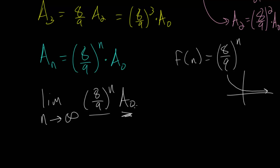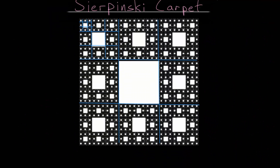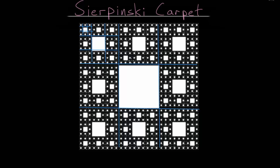Since this is a constant and the other factor gets closer and closer to zero, as n approaches infinity this limit approaches zero — giving us zero multiplied by a constant, which is zero. This means that the area of the Sierpinski carpet, after we carry out this process infinitely many times, is equal to zero.